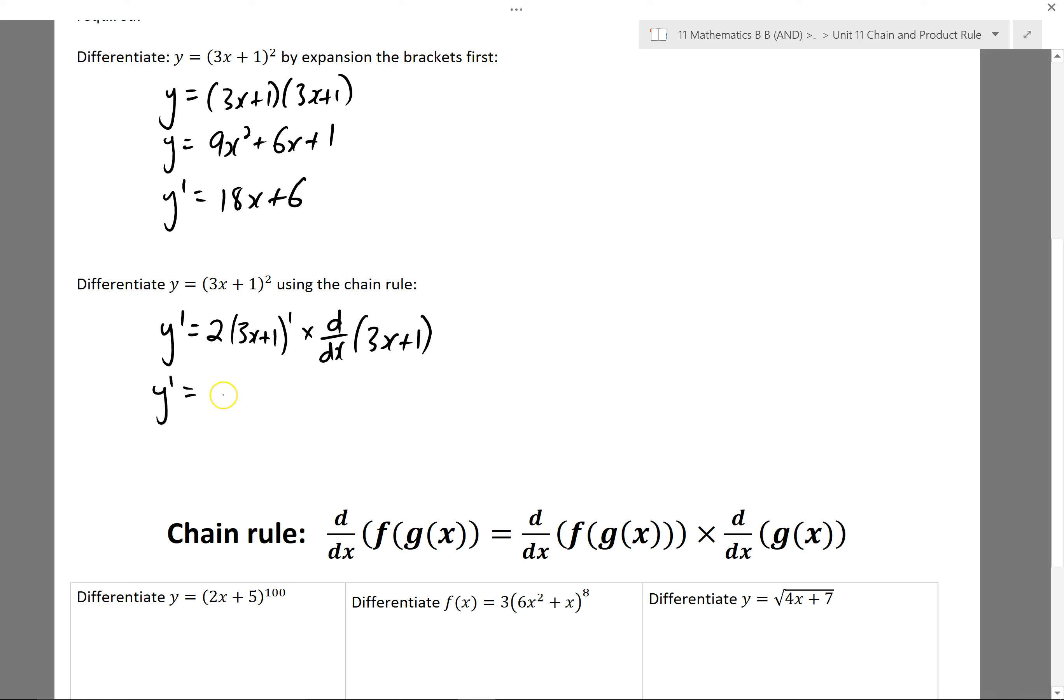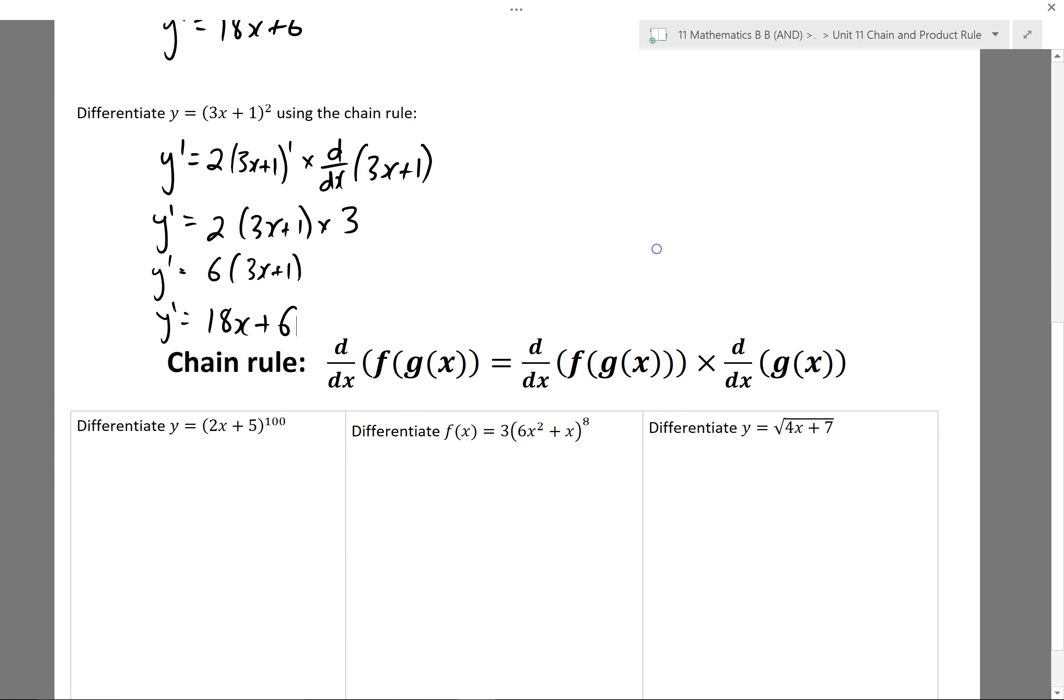So my derivative is 2 times 3x plus 1 times the derivative of 3x plus 1, which is 3. So 3 times 2 is 6. I expand these brackets, I get exactly the same as what I got when I expanded. So it seems like it's good to go.